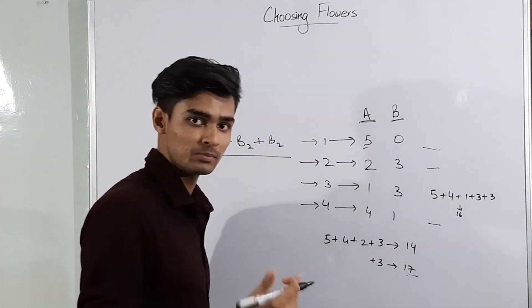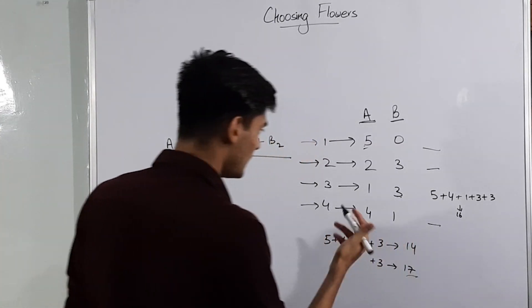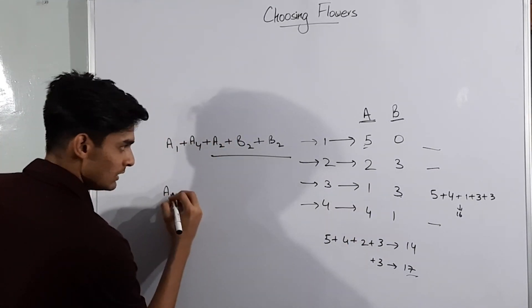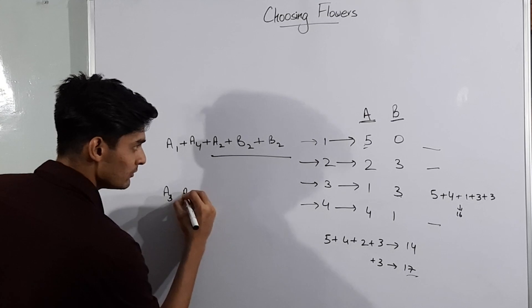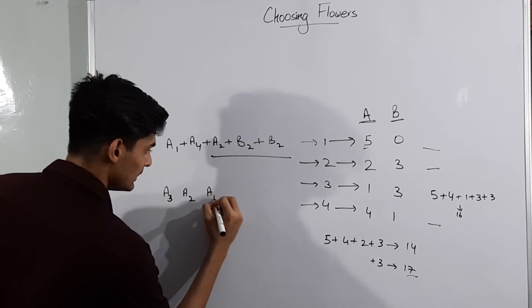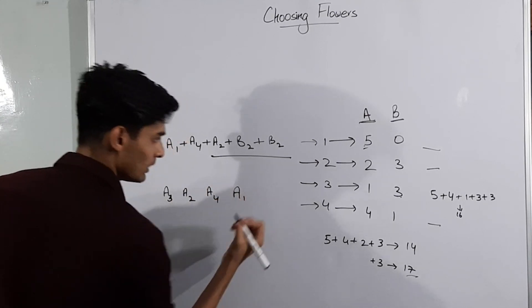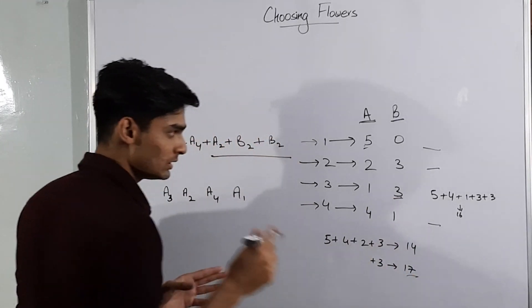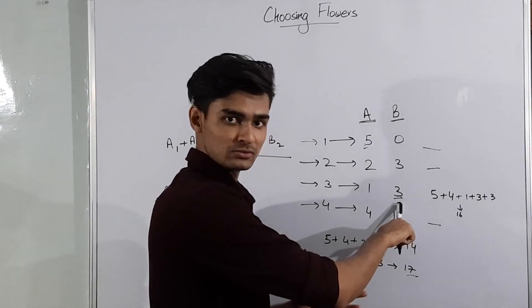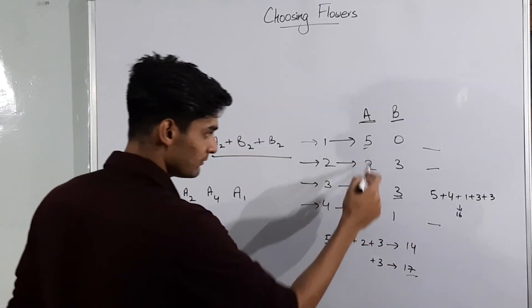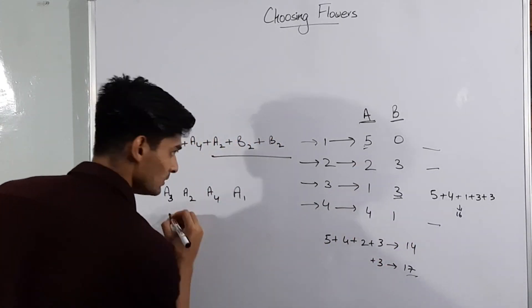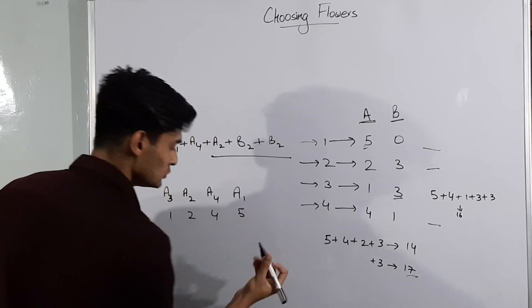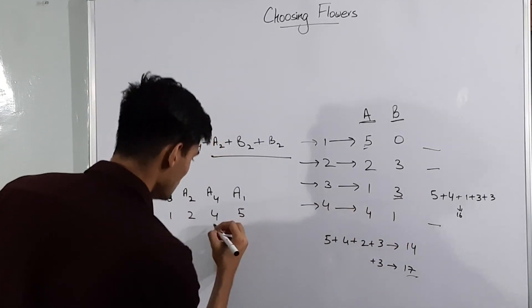Now how to do that in an optimized manner? For that we see that we are actually sorting these AI. So let's sort them. We have A3, then we have A2, then we have A4 and then we have A1. Now let's say we have to find the answer for this 3 only. Now what we are actually doing is we were looking at the upper bound of this 3, that is because we are taking 5 and 4. Therefore we can see that, let's write the values also, 1, 2, 4 and 5. So basically the upper bound of 3 will be 4.